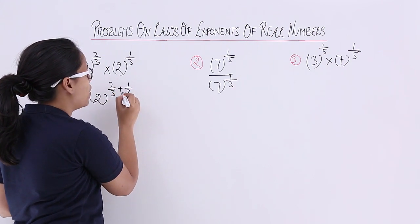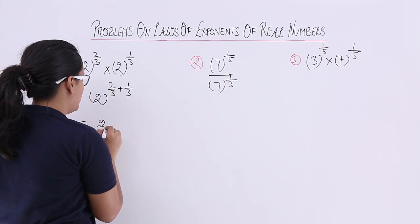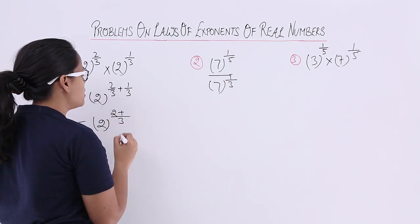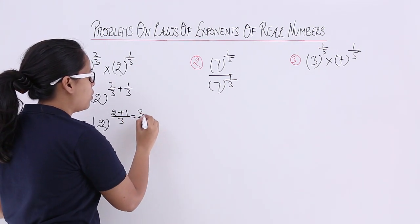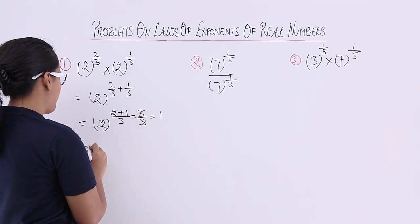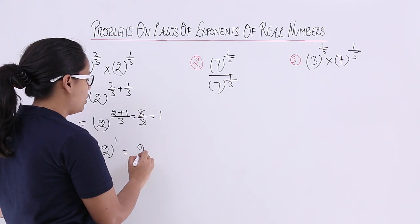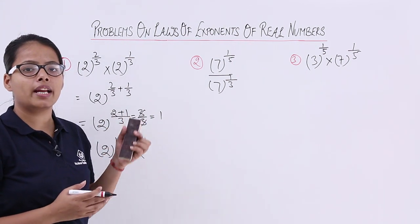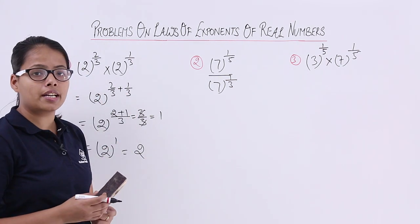To solve this expression, the base will remain as it is and the powers will get added: 2 by 3 plus 1 by 3. Taking the LCM, which is 3, you get 2 plus 1 over 3, which equals 3 by 3. On division of 3 by 3 you get 1, so the final result will be 2 raised to power 1, which means 2. If the bases are the same, the powers get added, giving a final result of 2.